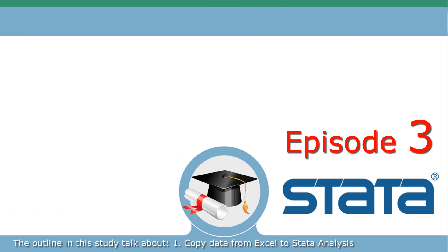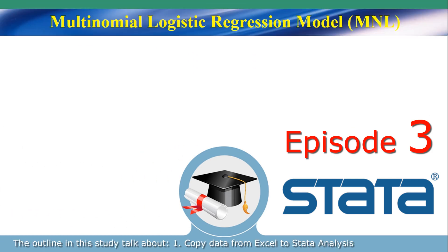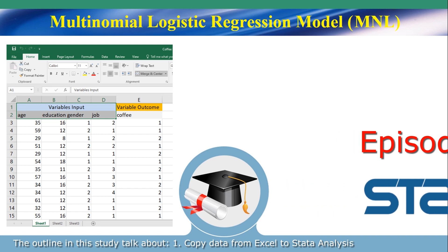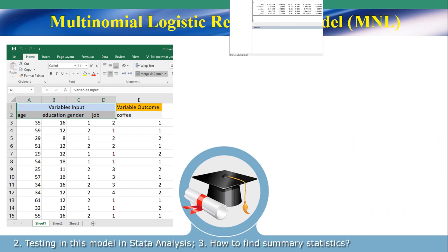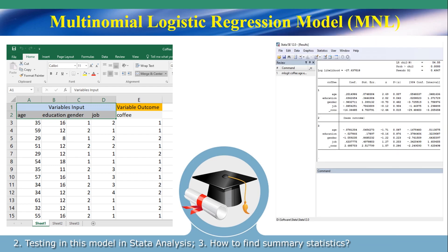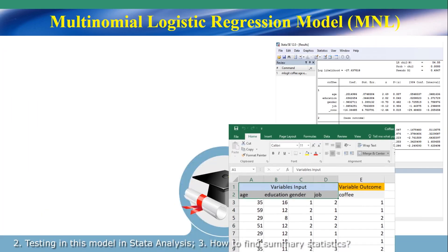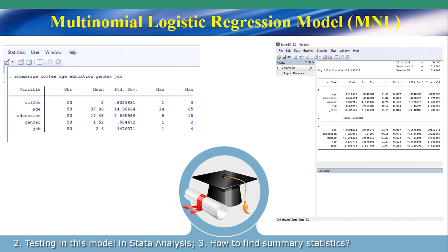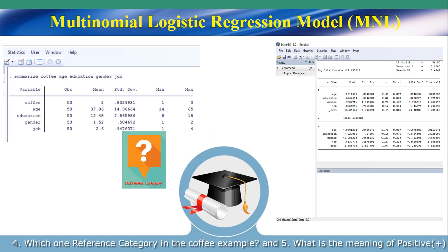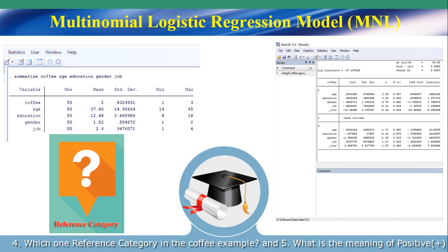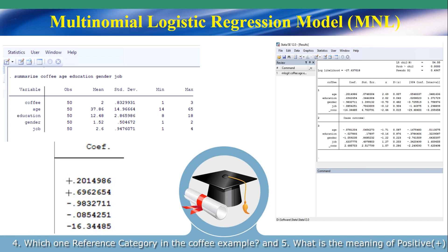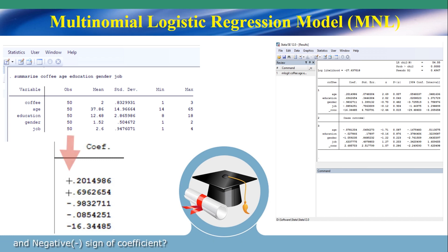The outline in this study covers: 1. Copy data from Excel to Stata. 2. Testing this model in Stata. 3. How to find summary statistics. 4. Which one is the reference category in the coffee example? 5. What is the meaning of positive and negative sign or coefficient?